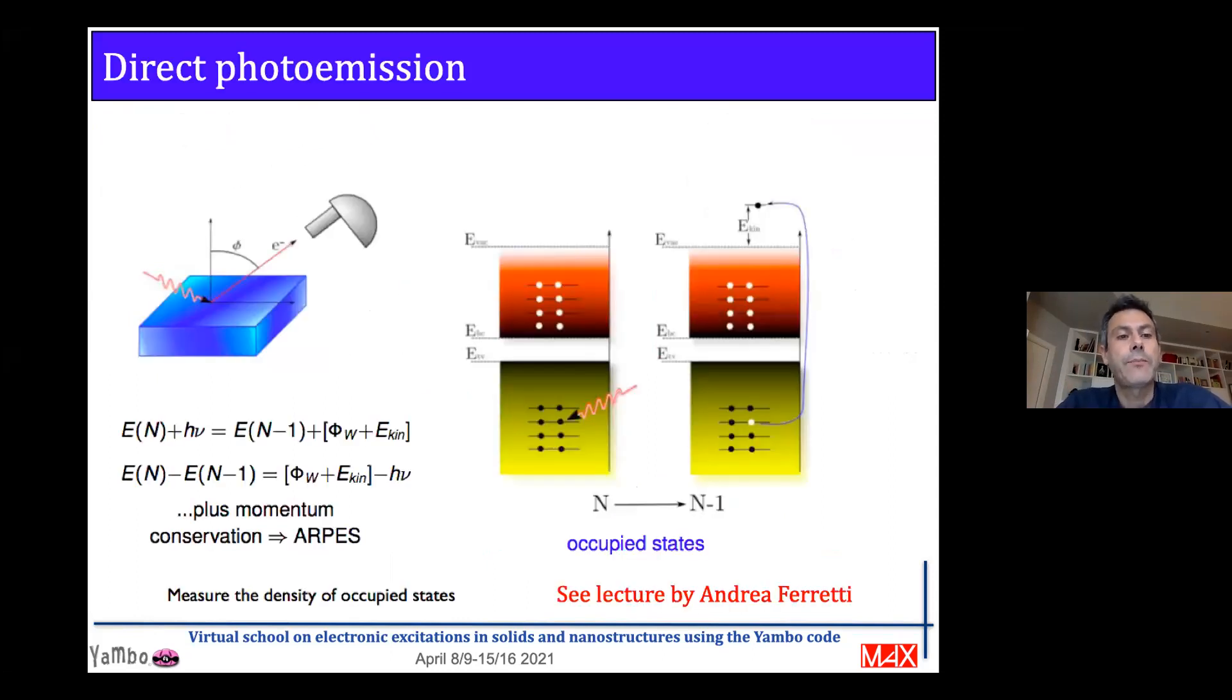As we have seen in the previous lectures, we are interested in calculating quantities that we can then measure experimentally, as for instance a photoemission experiment. In photoemission experiment, we measure the kinetic energy of an upcoming electron ejected from a light pulse and this energy will provide us information on the difference of energy between a system with n electrons and a system with n minus one electrons.